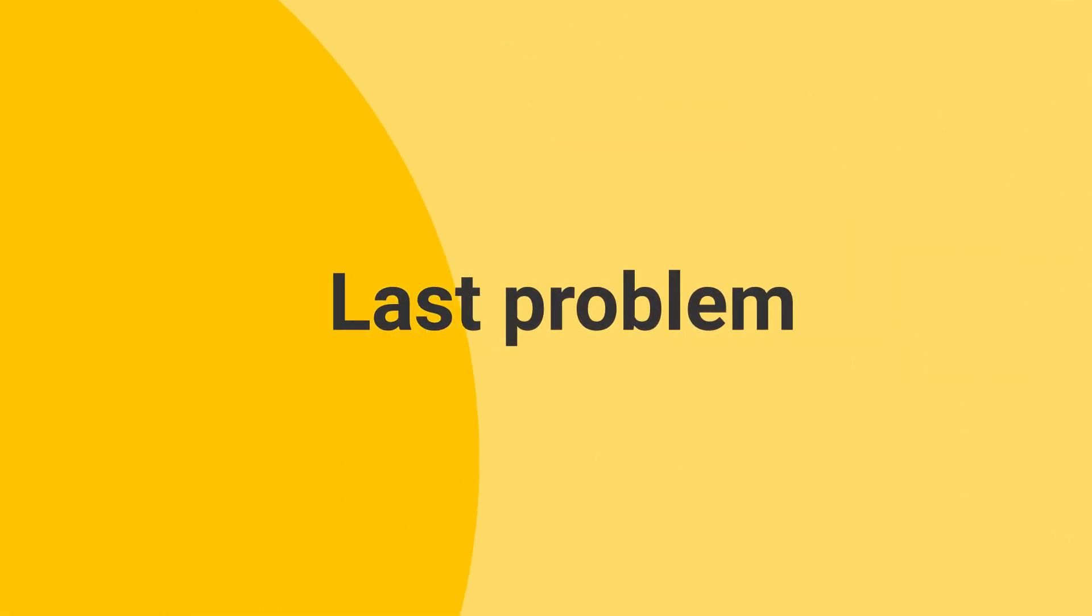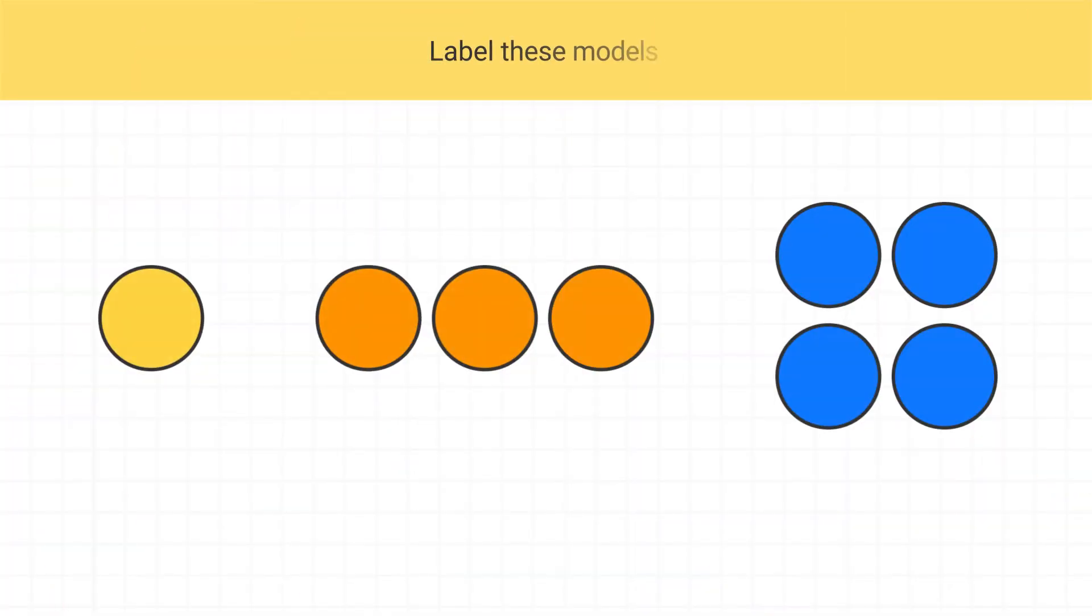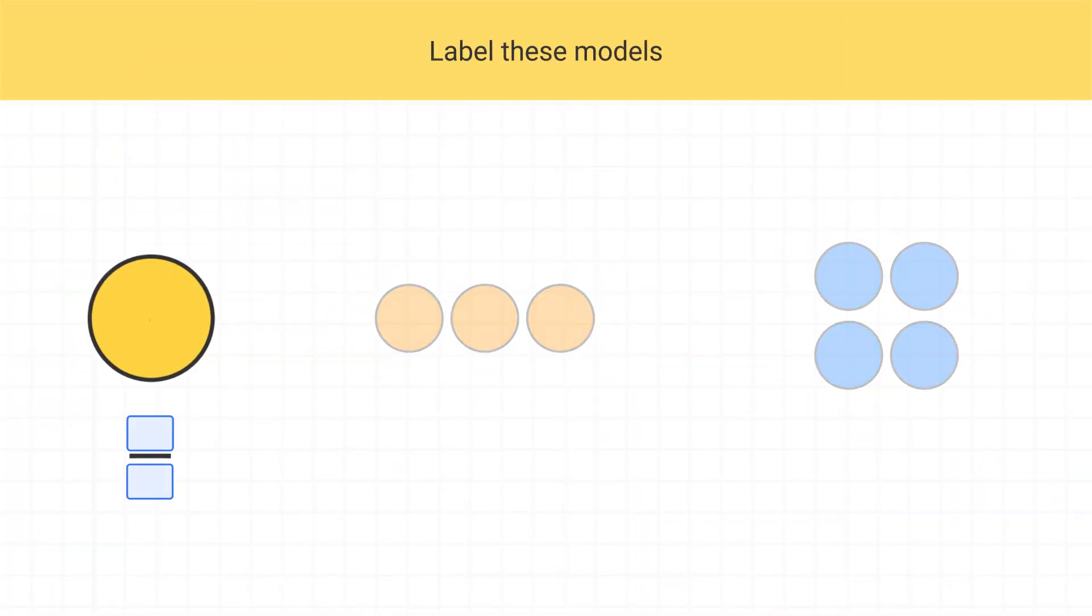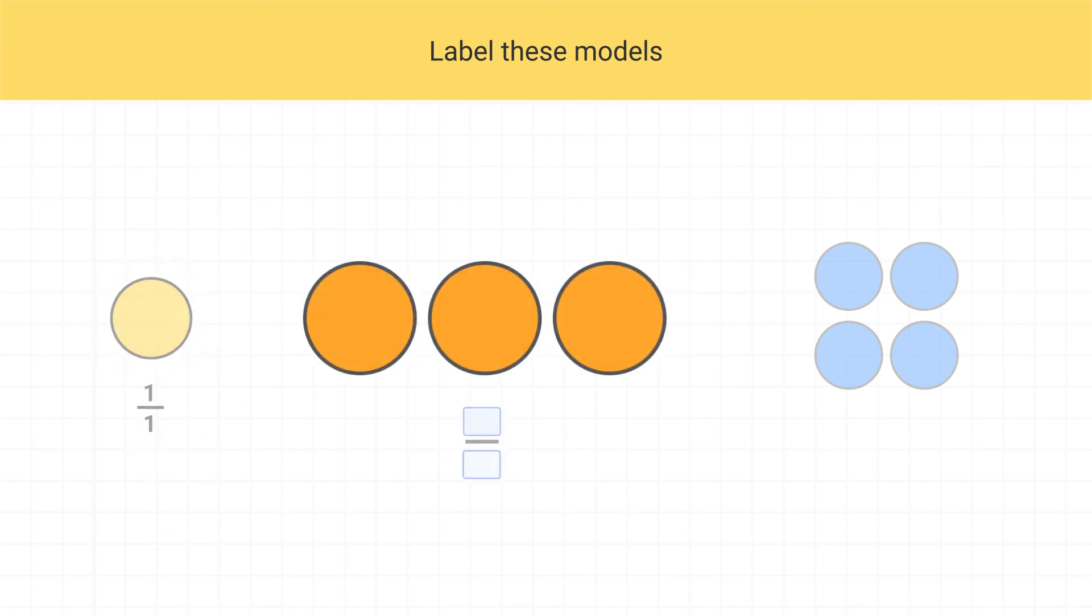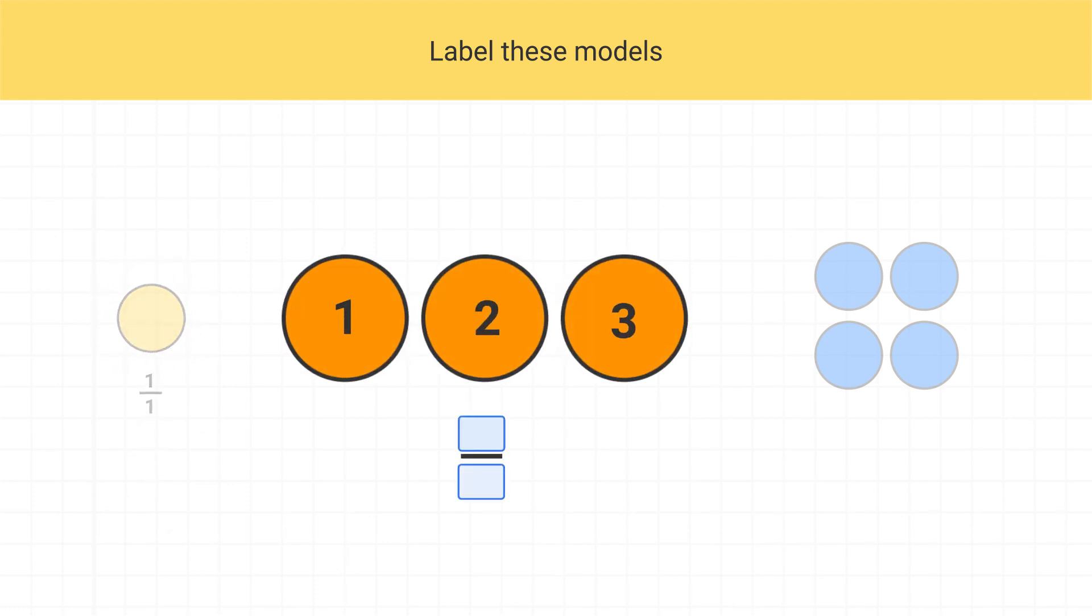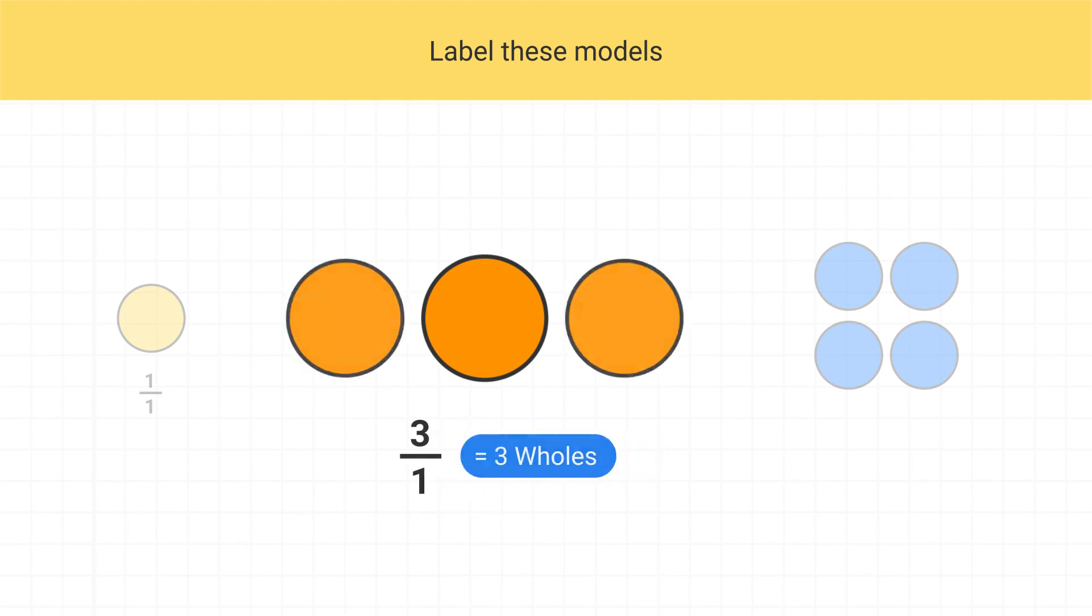Now here's your last problem for this video. Label these models. Well, this model, it's just 1 shaded piece, and the circle is only made of 1 shaded piece, so this is the fraction 1 over 1. The second model has 3 shaded pieces, so the numerator is 3. However, each piece is a full or a whole circle, so our denominator is 1. This is 3 wholes.